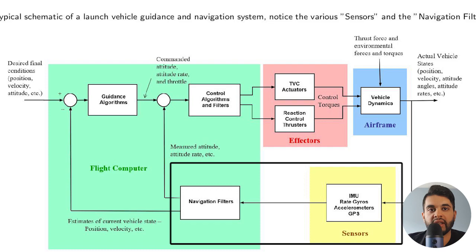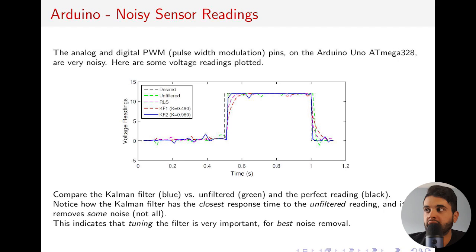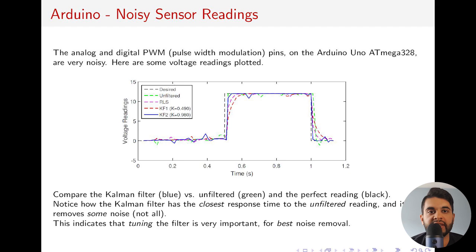Most of you in a controls class will not be doing Kalman filtering, because it's actually a separate course called estimation — simply how you estimate your state from a noisy measurement. That's where the Kalman filter is very important. Here I have an Arduino example of a Kalman filter, and you can see how it does filter out some noise from your system, though it's not perfect. There are ways to make it better and remove more noise.